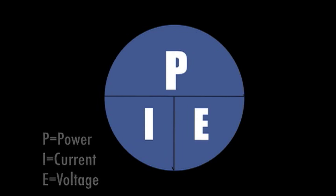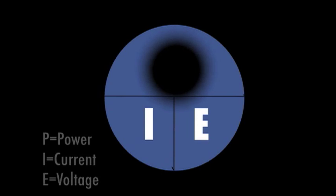If I were solving for power, I would simply cover the P at the top of the chart. What remains is the required equation, I times E.